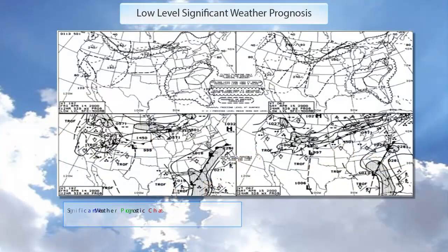One test question asks how significant weather prognostic charts are best used by a pilot. One answer option says for overall planning at all altitudes — except this is a low level significant weather prognostic chart, so it only goes up to a certain altitude. That altitude is 24,000 feet. People do fly above that, so they couldn't use it for that purpose.